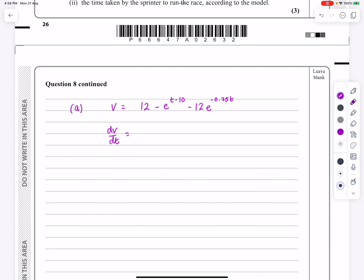The first thing we're going to do is to try and differentiate this function, and we know how to differentiate e. If I've got y equals e to the kx and I want to differentiate it, it just becomes k e to the kx. So dv/dt equals the differential of 12 disappears. The differential of e to the t minus 10 is e to the t minus 10 multiplied by the differential of that, which is 1, so it's just the same function.